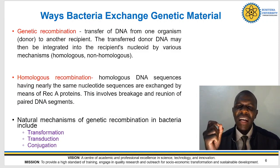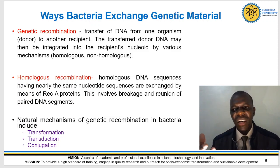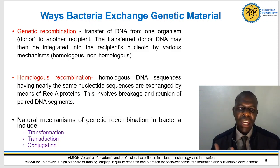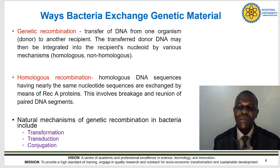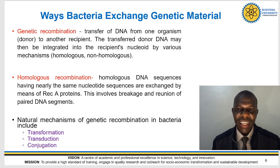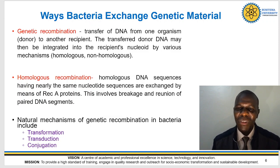This integration can be homologous or non-homologous. In homologous recombination, DNA sequences have entirely or near the same nucleotide sequences, and exchange occurs by means of recombinase proteins - it involves breakage and reunion of paired DNA fragments. In bacteria there are basically three natural mechanisms through which genetic recombination occurs, and these are transformation, transduction and conjugation. If there's anything you have to take from this lecture, it's these three mechanisms.